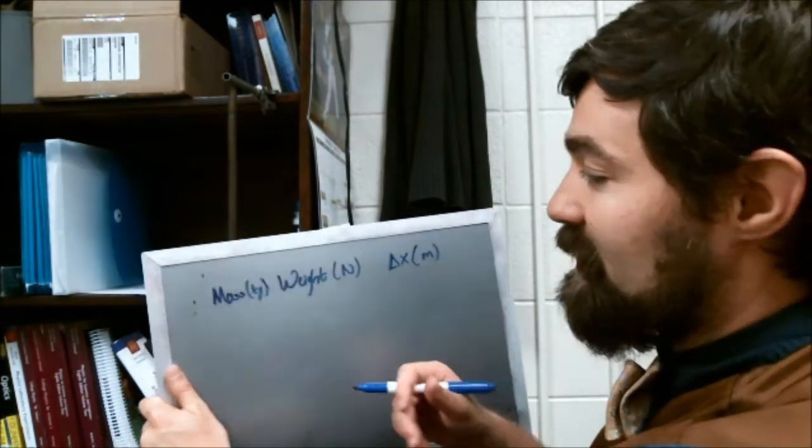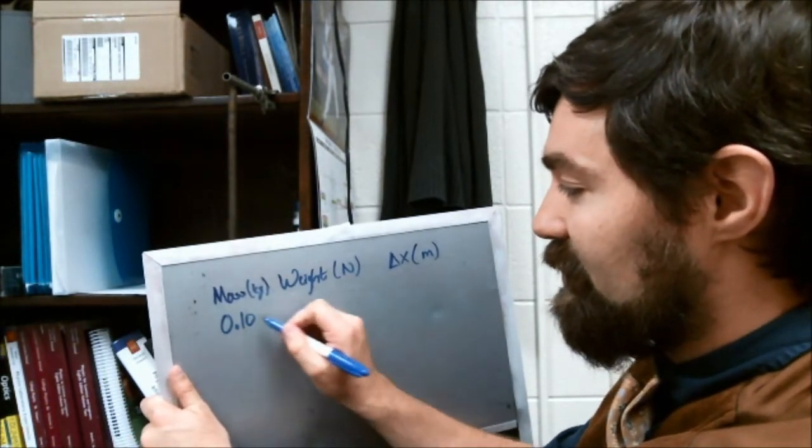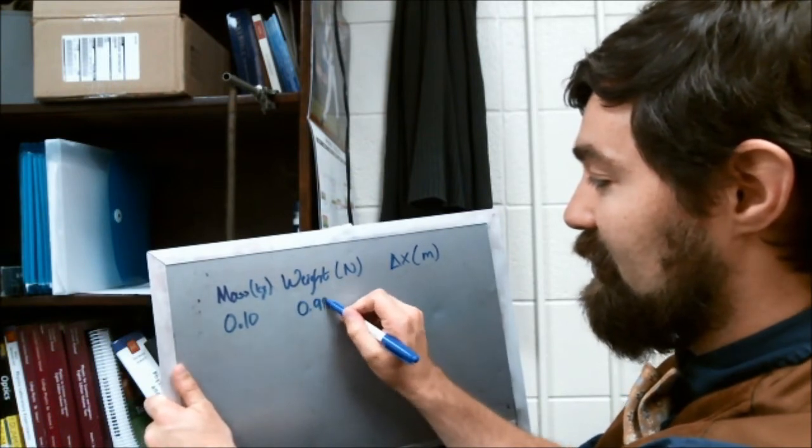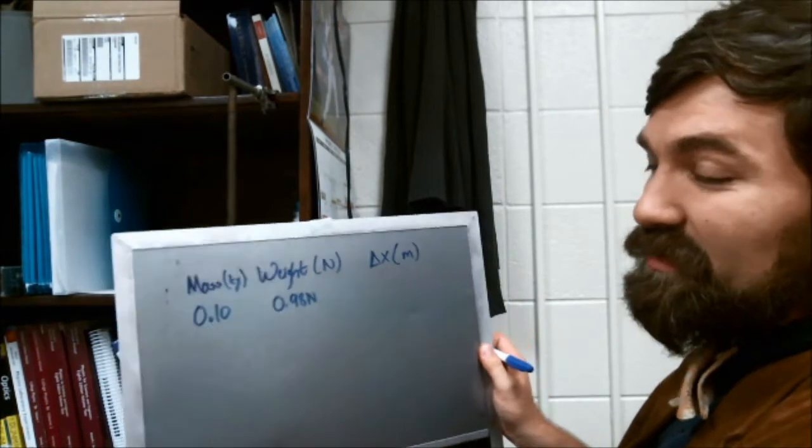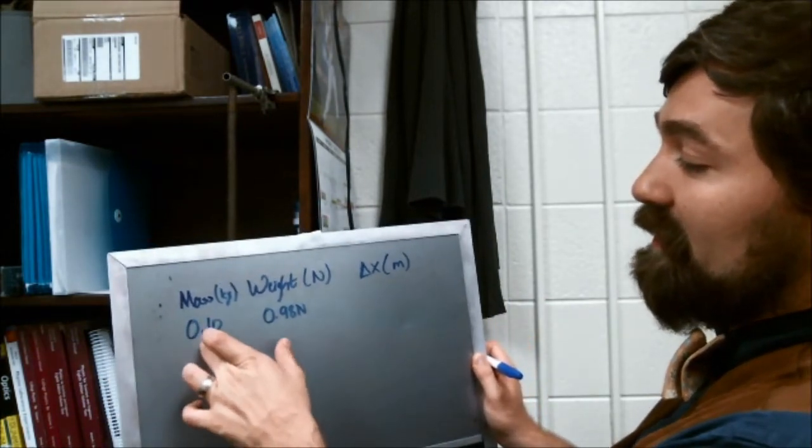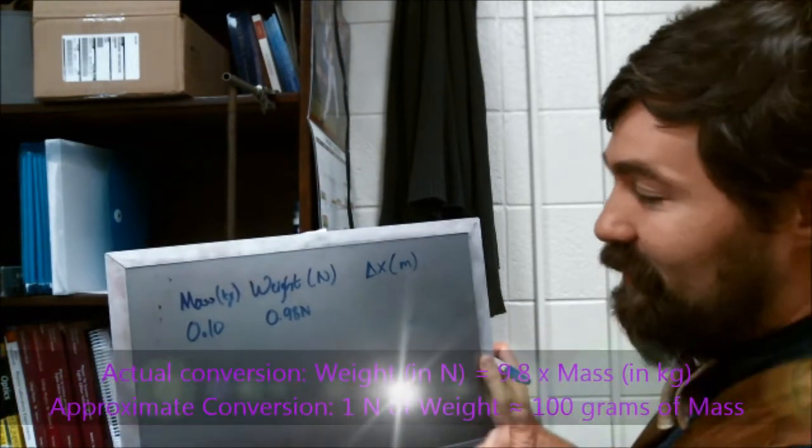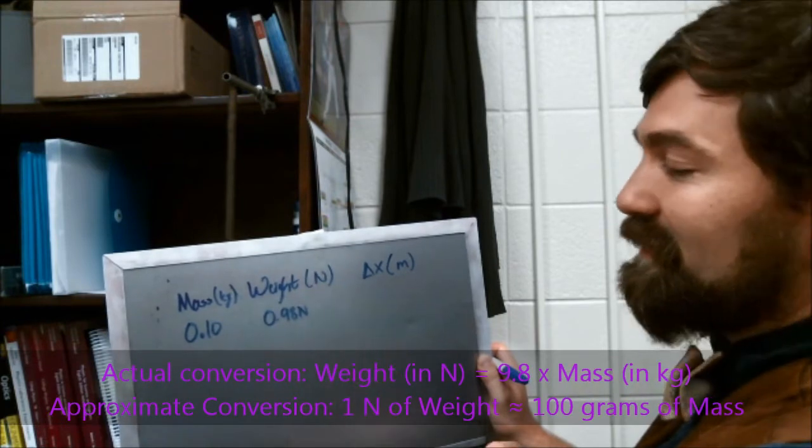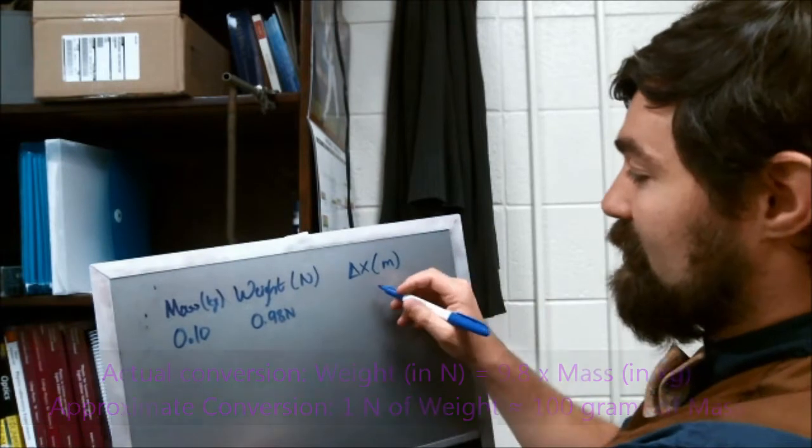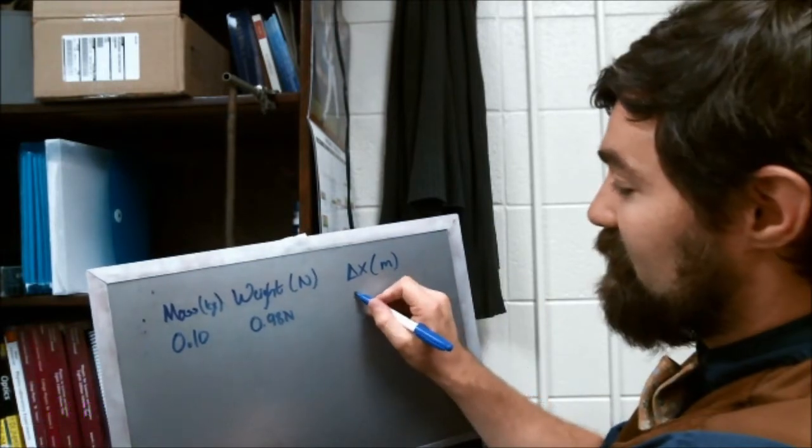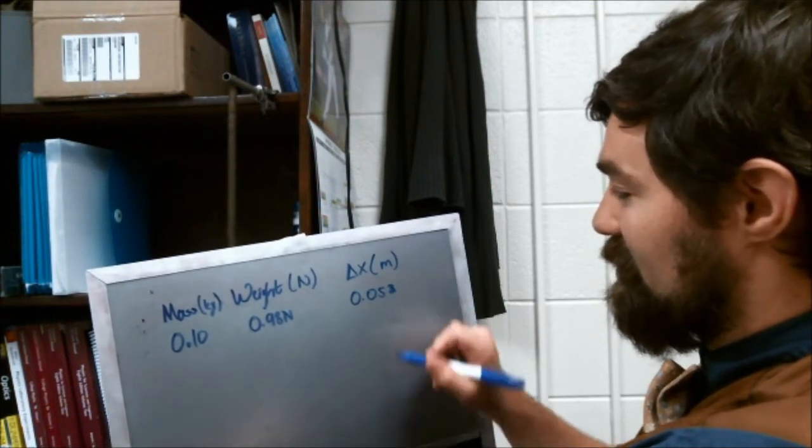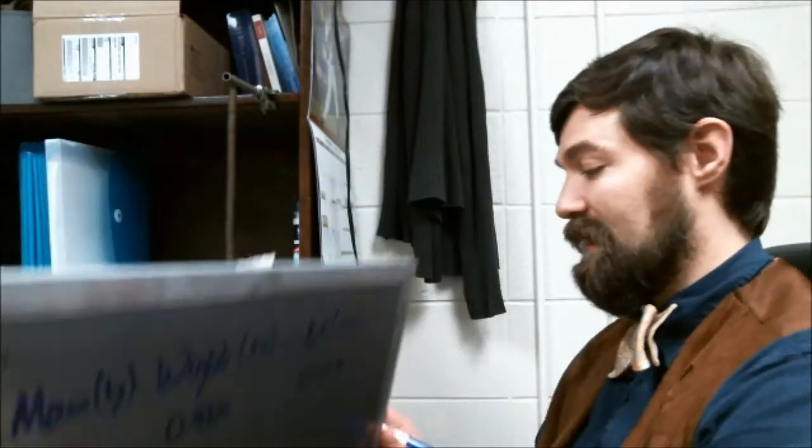So that first mass was 100 grams, that is 0.1 kilogram. That is a weight of 0.98 newtons. If you want to be less precise you can use a rough conversion factor: 0.1 kilograms is approximately equal to 1 newton. There's about a 2% difference there. And it's stretched by 5.3 centimeters, so that's 0.053 meters. That's my first data point.